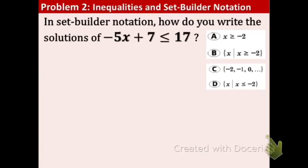Example 2, in set-builder notation, how do you write the solutions of this inequality? negative 5x plus 7 is less than or equal to 17. We want to first get the variable by itself. So let's subtract 7. Negative 5x is less than or equal to 10. And we need to get the x by itself, so we'll divide both sides by negative 5.